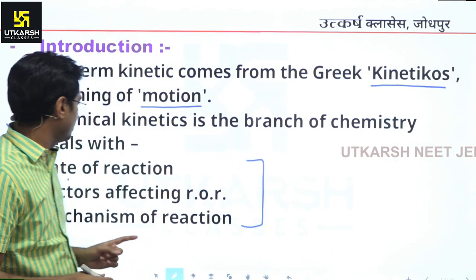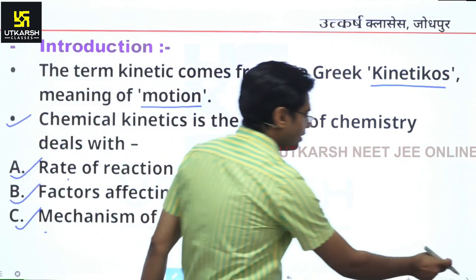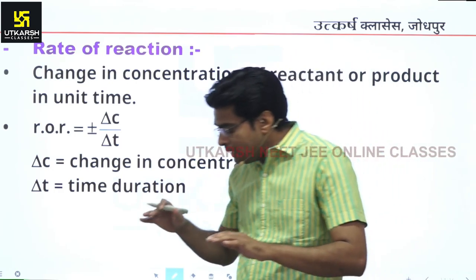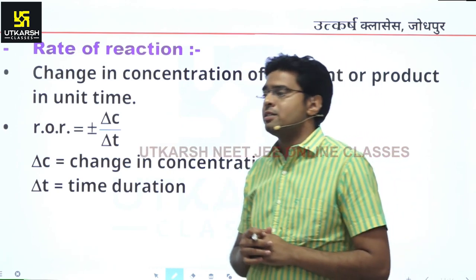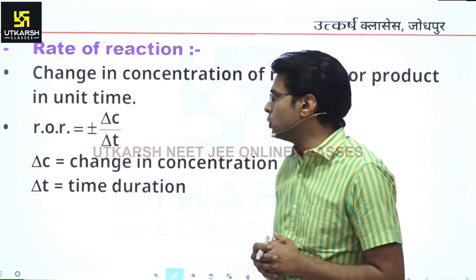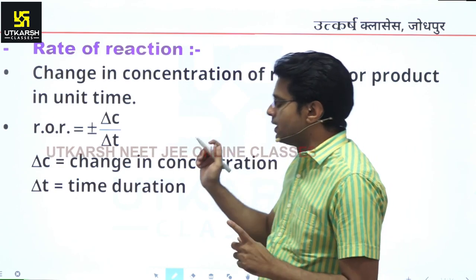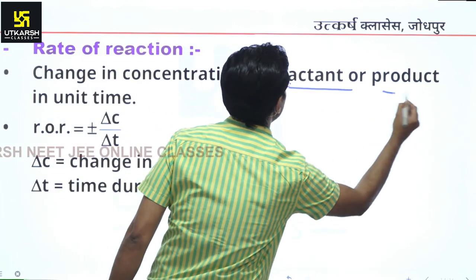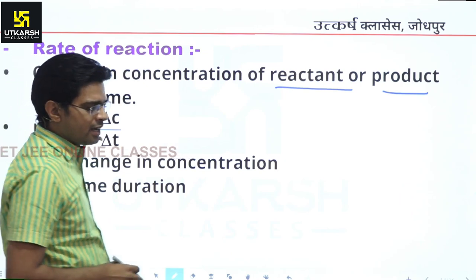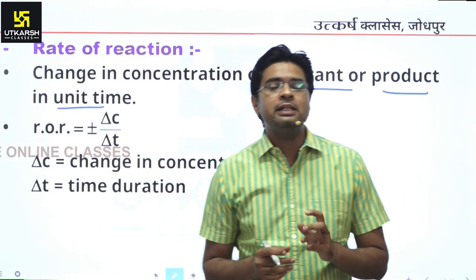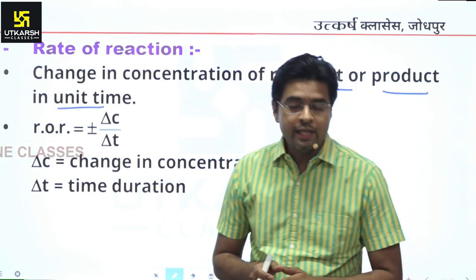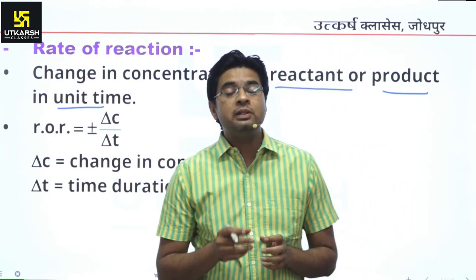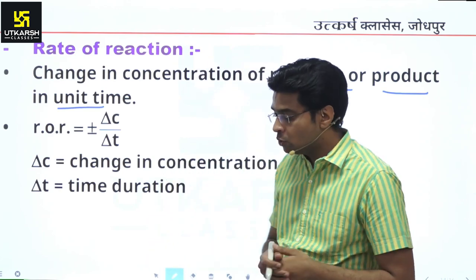We will start with what is rate of reaction. In daily life we use the term speed or rate. For a chemical reaction, the rate is the change in concentration of reactant or product in a unit time. As we already know, speed is basically a change in unit time. So in a chemical reaction, what changes with time is the concentration of the reactant or the product.